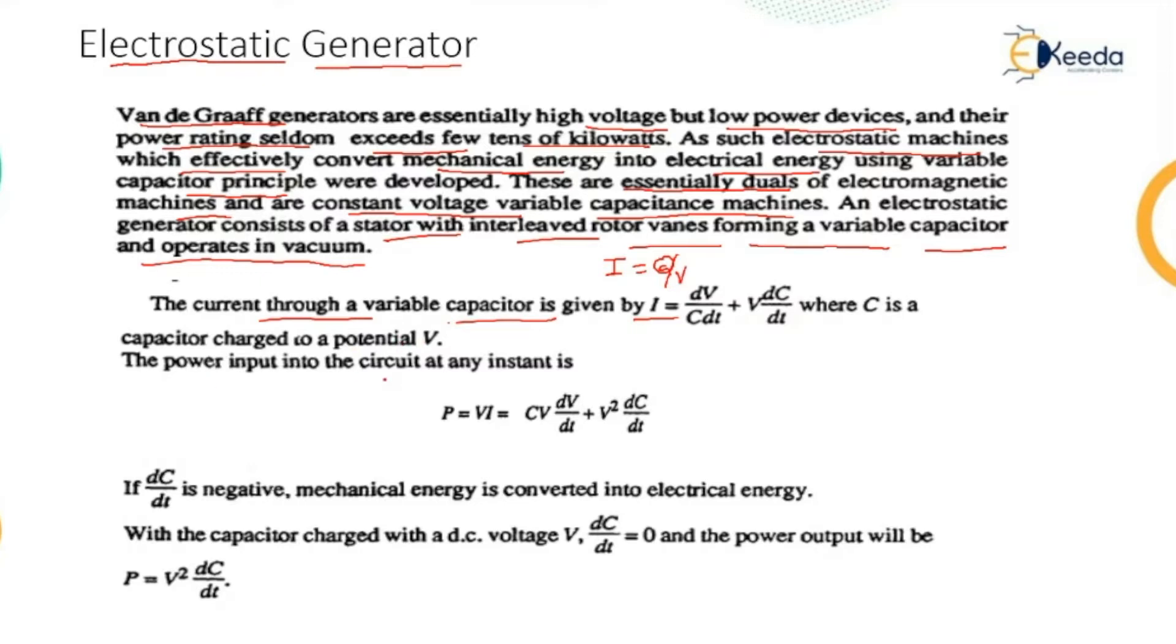The power input into the circuit at any instant is P equals V times i, which gives C times V times dV/dt plus V squared times dC/dt. If dC/dt is negative, mechanical energy is converted into electrical energy.